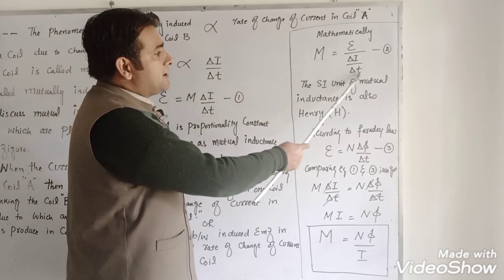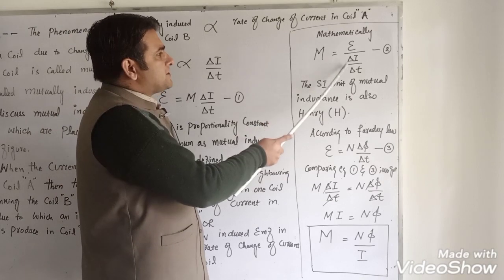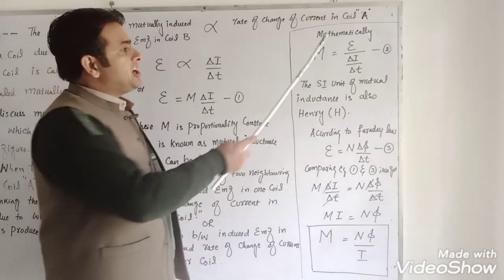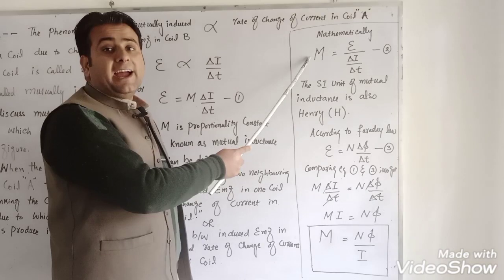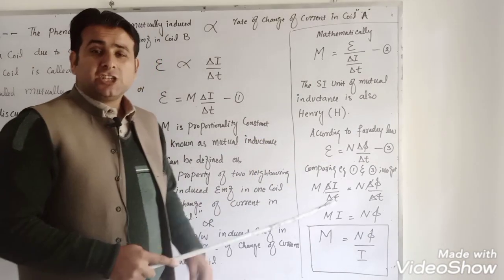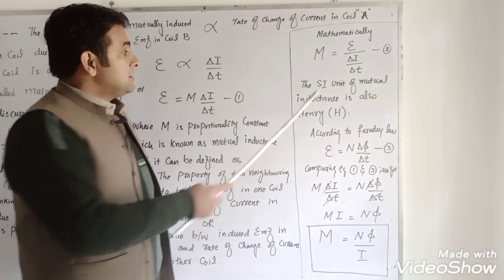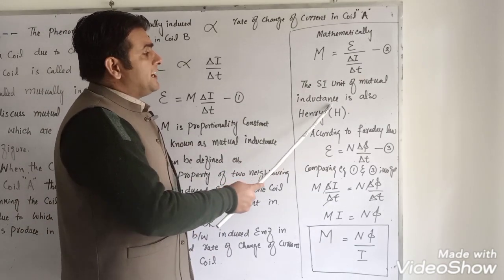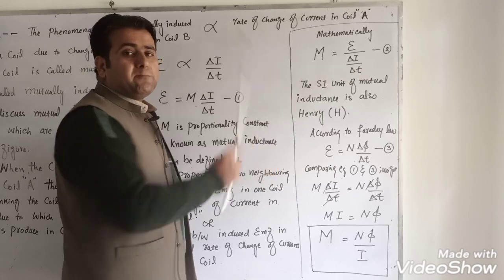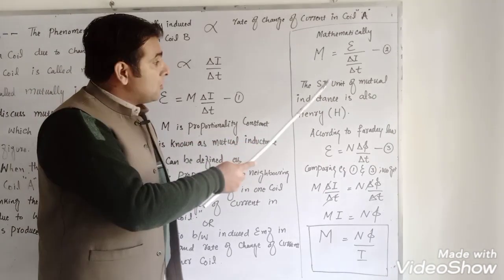The SI unit of mutual inductance — just as in the previous lecture the same formula appeared for self inductance L — since both formulas are the same, their units must also be the same. Therefore, the SI unit of mutual inductance is also Henry, which is actually volt·second per ampere.